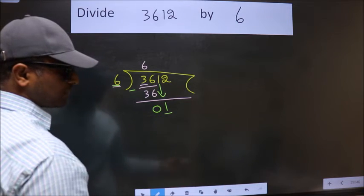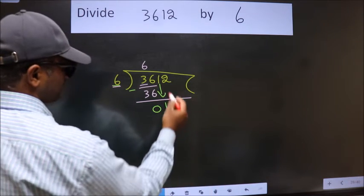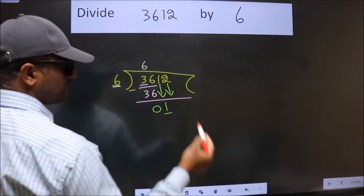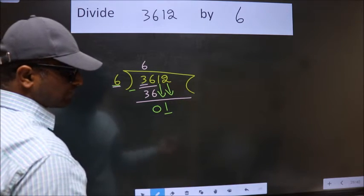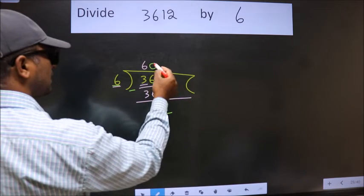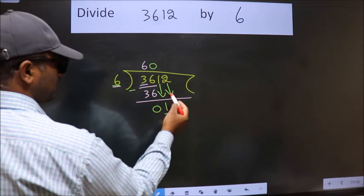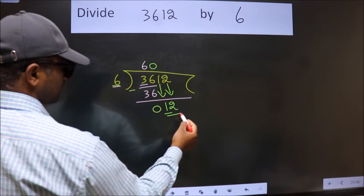So we should bring down the second number. The rule to bring down the second number is put 0 here. Then only we can bring down this number. So, 12.